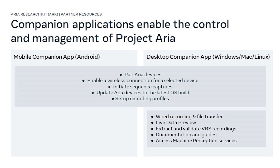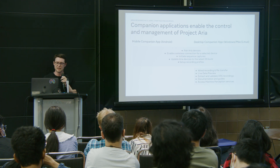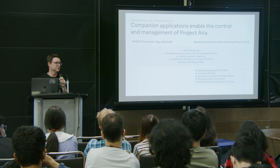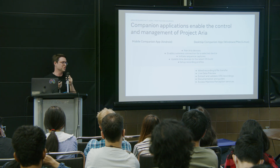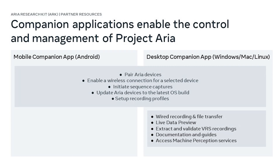The desktop app has more functionality than the mobile companion app. It allows you to do a wired transfer — connect your USB, transfer your data to your computer, and do your work. You can also have a live data preview to visualize Project ARIA and demo it to a friend. Documentation and guides are available to make sure you can get set up as soon as possible.